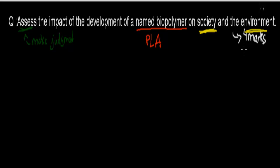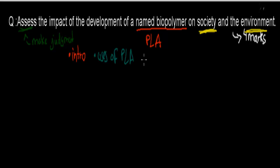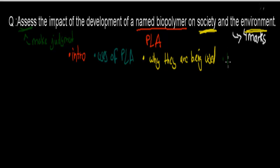You've also got to take into consideration that it's worth 4 marks. When it comes to a 4-mark question, especially an assess or judgment question, I usually start with a short intro, then look at the uses of the polymer — so uses of PLA — then the reasons why they're being used, and the limitations of using this biopolymer. Most of your marks you'll probably get for the uses of PLA, why they're being used, and the limitations. But it's always good to include an intro to make it a nice essay.